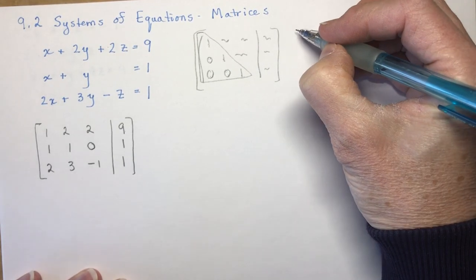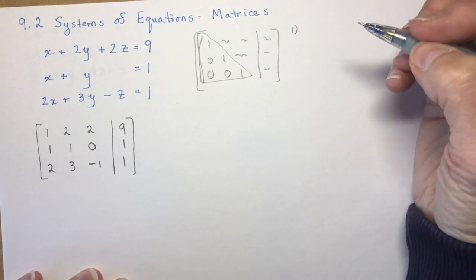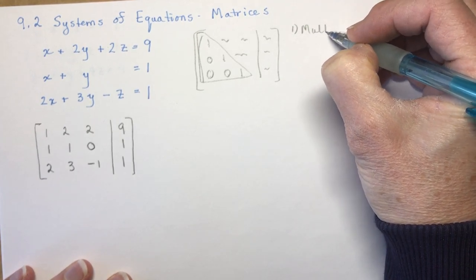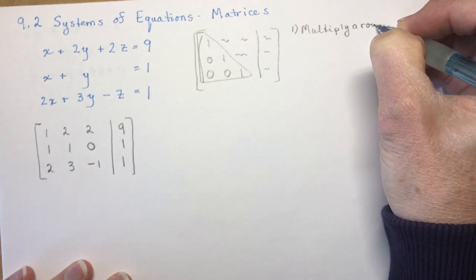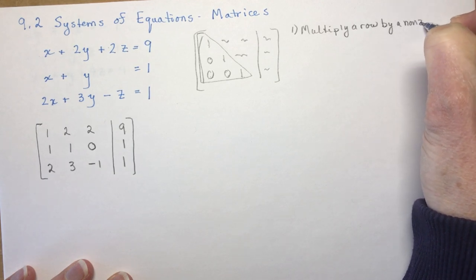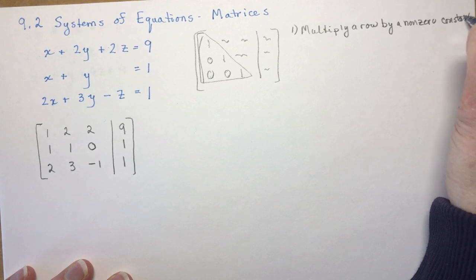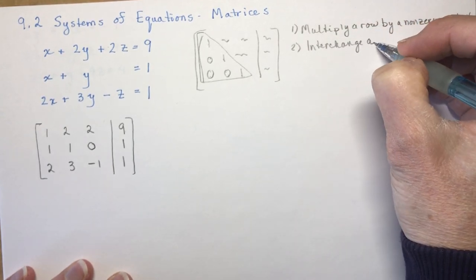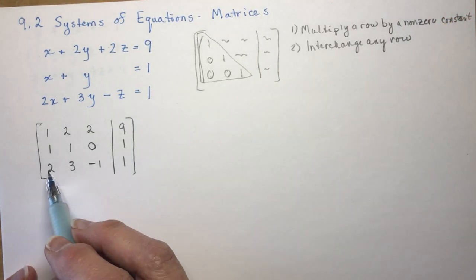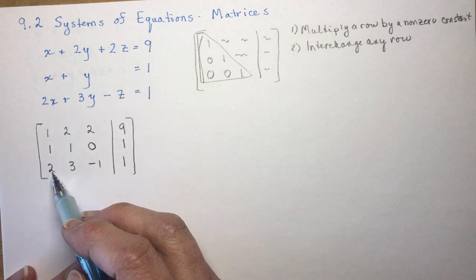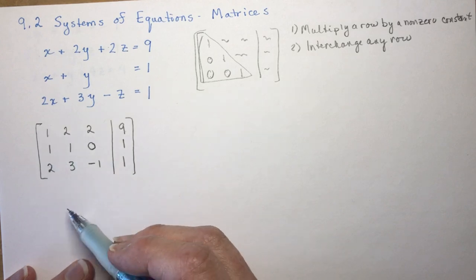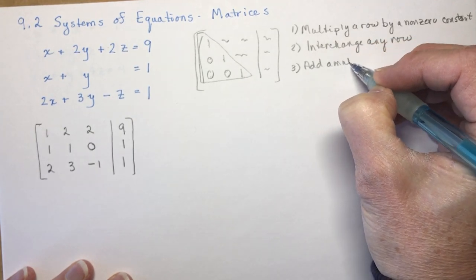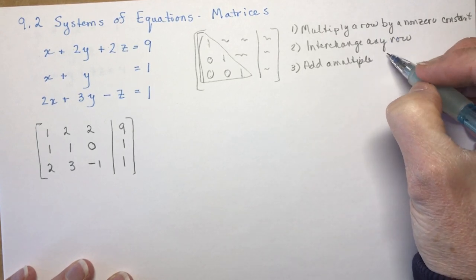Just like when solving two equations with two unknowns, you multiply to eliminate things. There are three allowed operations: you can multiply a row by any non-zero constant — positive or negative. You can interchange any two rows, which is useful if, for example, a row already has a 1 in the leading position and you want to move it to the top. And you can add a multiple of any row to another row.